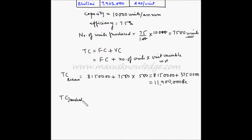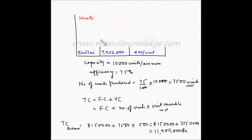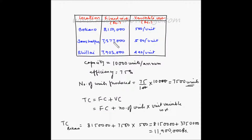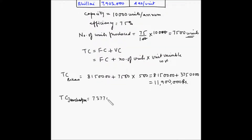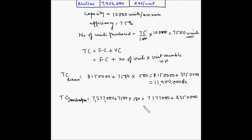The total cost of production at Jamshedpur is equal to the fixed cost of rupees 7,377,000 plus 7,500 multiplied by rupees 580. This equals 7,377,000 plus 4,350,000, giving a total cost of rupees 11,727,000.